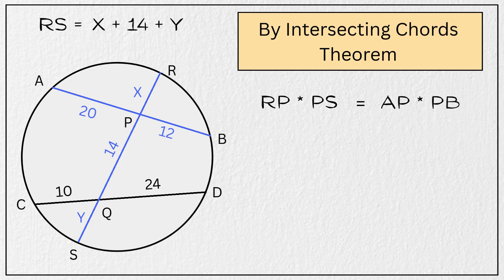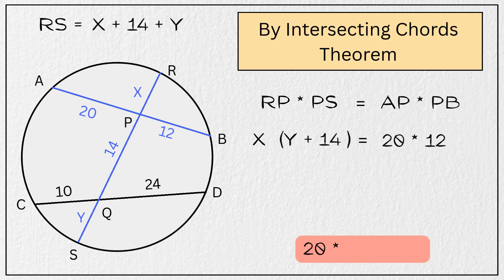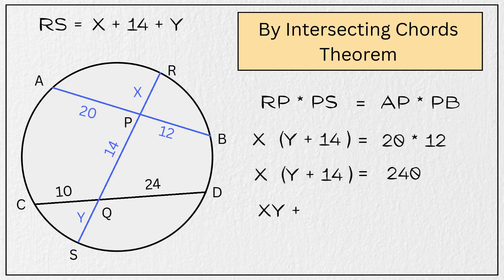Substituting the values, we get X multiplied by the quantity Y plus 14 is equal to 20 multiplied by 12. 20 times 12 is 240. So now we have X times the quantity Y plus 14 is equal to 240. Expanding this, we get XY plus 14X equals 240. Let's call this equation 1.